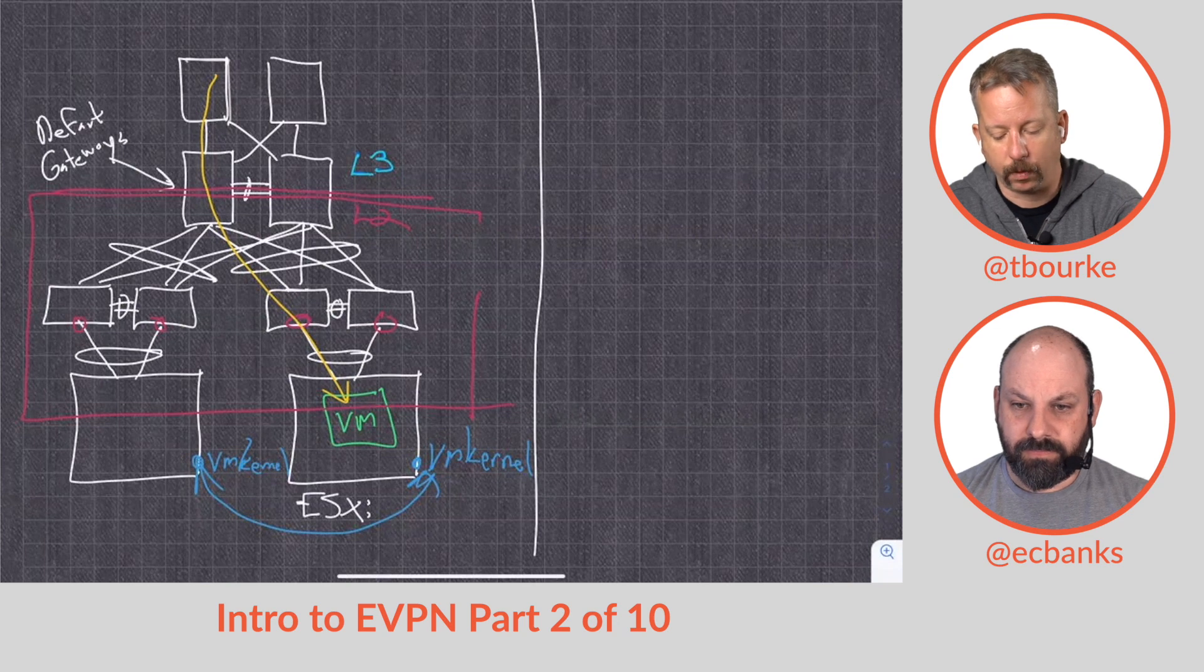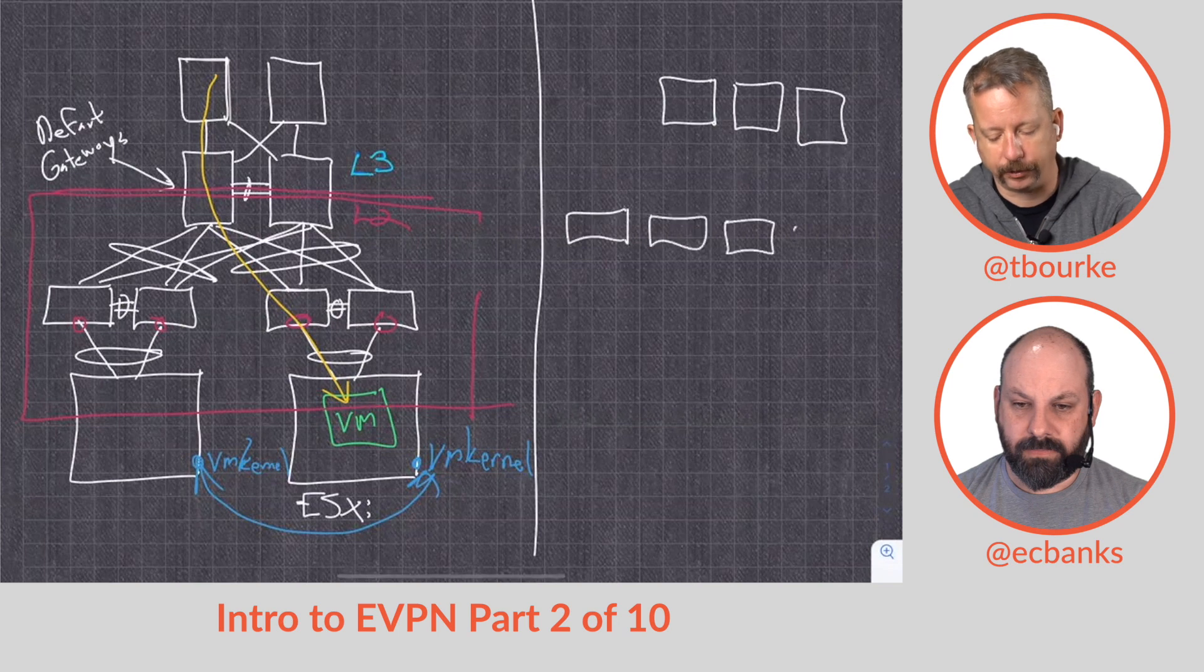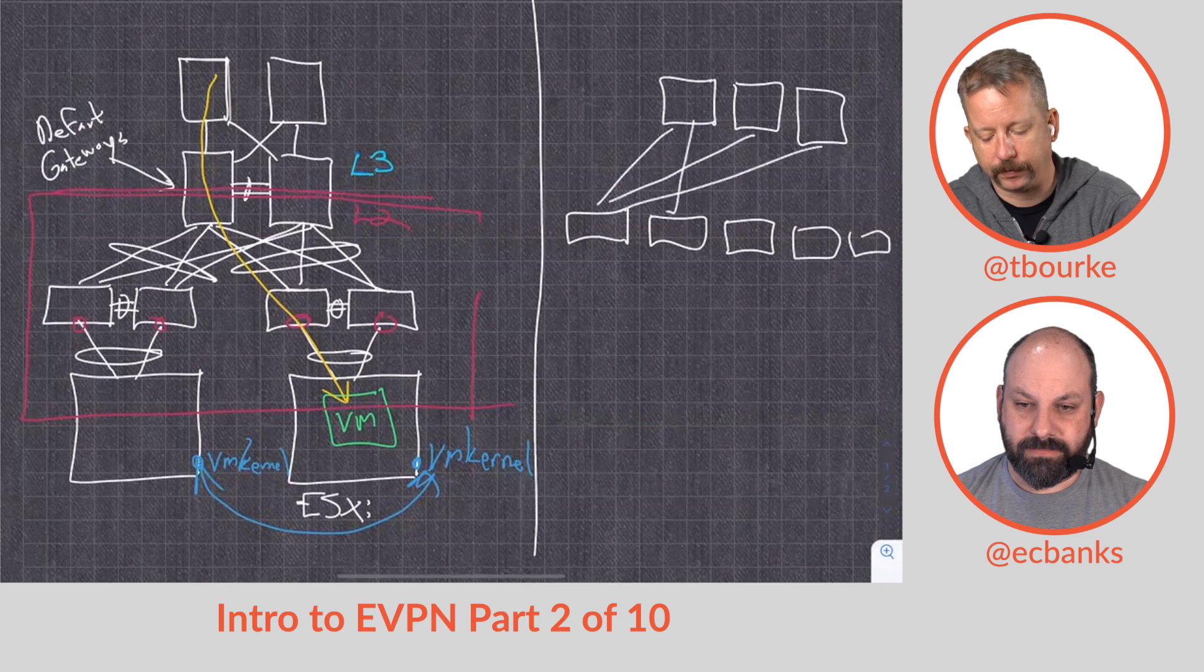What we want to do, what we would like to do, is move towards this more elegant leaf spine topology, which gives us a number of benefits.